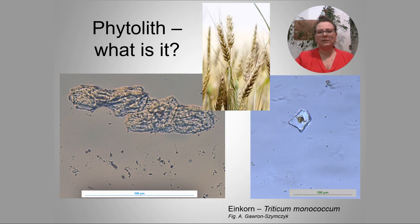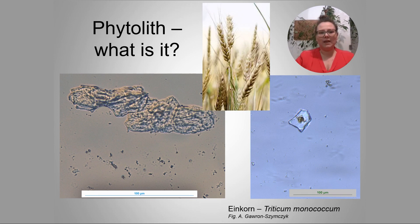There are two reasons for the formation of phytoliths. First, silica builds into the interior of cells, cell walls, or intercellular spaces in the whole plant — leaves, stems, and flowers. This is a process controlled by the plant genetically and physiologically. Second, it depends on the climate and conditions in which the plant grows. Phytoliths perform a protective function by protecting plants from pests and microbes.